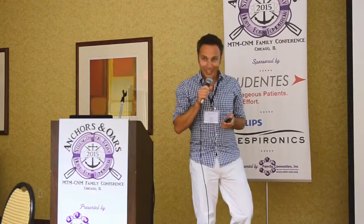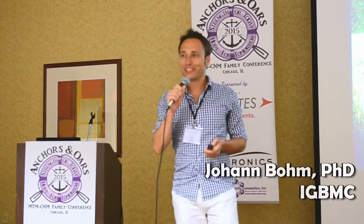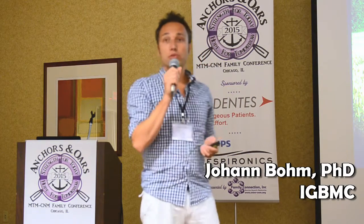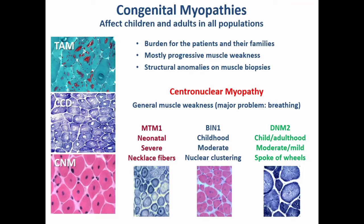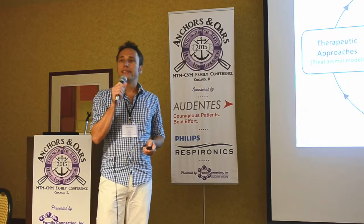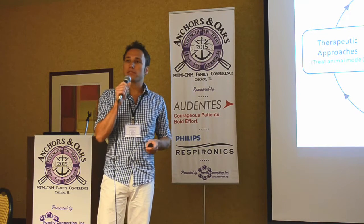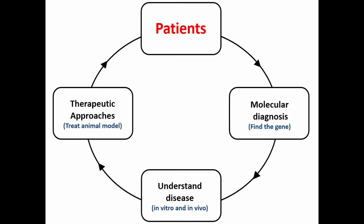I'm the guy working at a very remote place in France. Just to remind you, there are different forms of centronuclear and myotubular myopathy — these are the classical forms associated with mutations in MTM1, BIN1, and Dynamin-2. But as Alan was showing, there are also cases with Titin mutations, Ryanodine receptor, or SPEG. We are working on all aspects of centronuclear and myotubular myopathy in the lab.